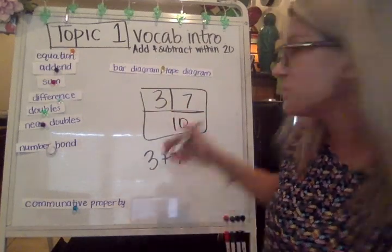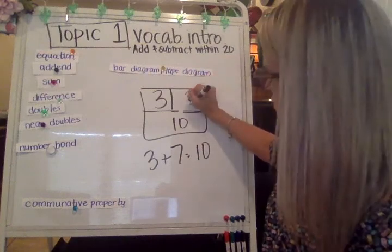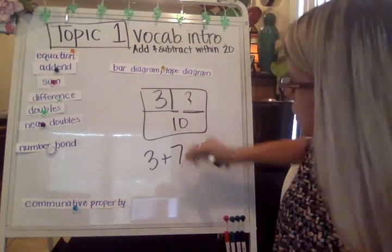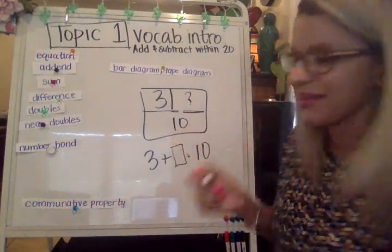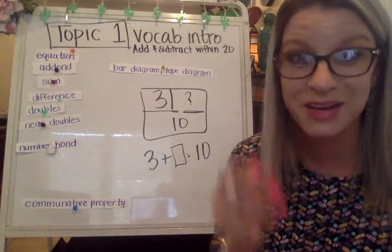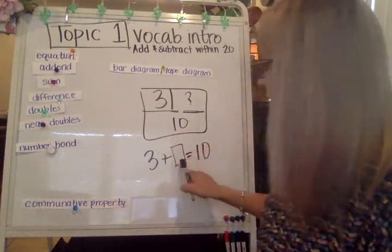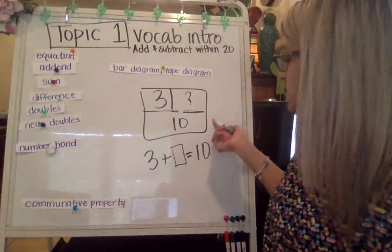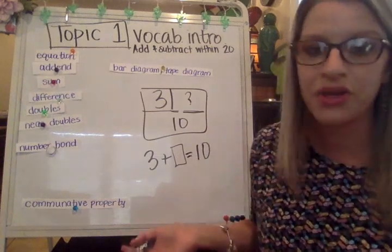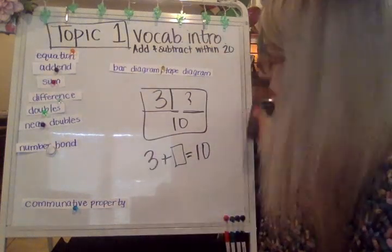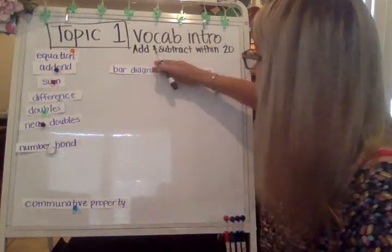Three plus seven — remember, that's what that signifies. Three plus seven is ten. Sometimes you might have a missing box with a question mark, meaning you're looking for that mystery number. I like putting a box there because it's easier to fill in once I've found the difference or the sum. So three plus seven is ten — there's another bar diagram.